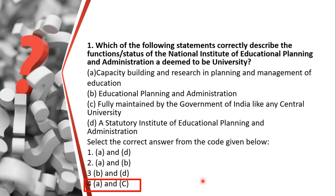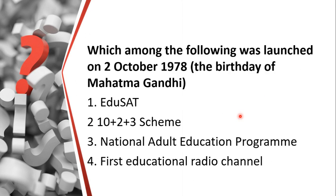I suggest you read the question first, pause, and try to answer yourself for better understanding. The correct options are A and C: capacity building and research in planning and management of education, and fully maintained by the Government of India like any other central university. The name itself — National Institute of Educational Planning and Administration — makes it clear.